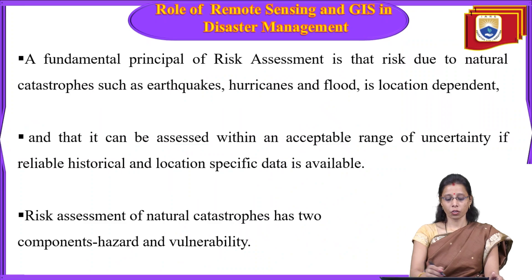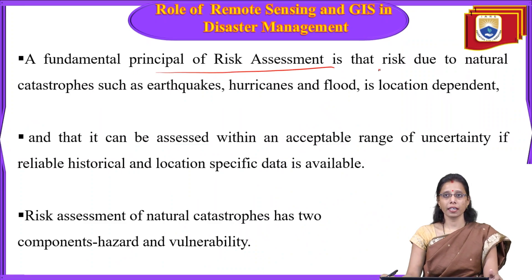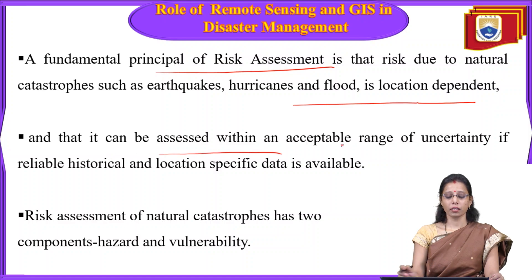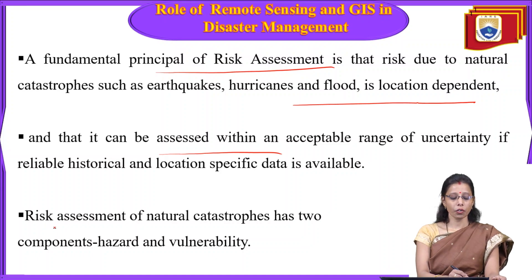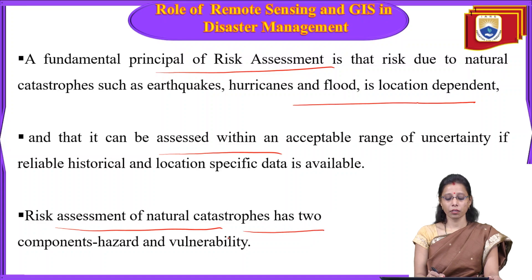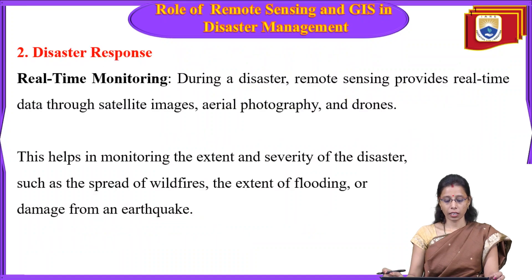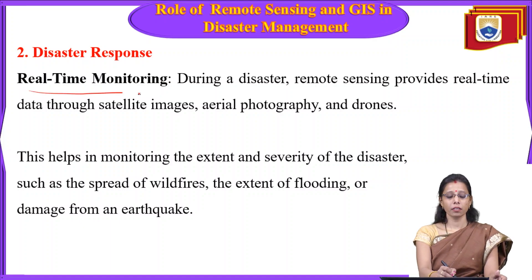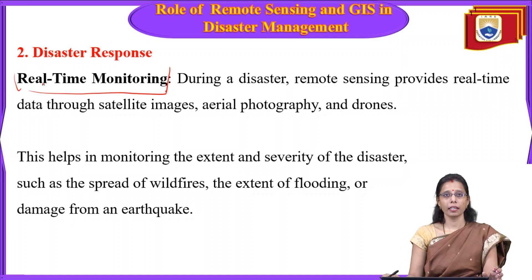The fundamental principle of risk assessment is that risk due to natural catastrophes such as earthquakes, hurricanes, and floods is location-dependent, and can be assessed within an acceptable range of uncertainty if reliable historical location-specific data is available. Risk assessment of natural catastrophes has two components: hazard and vulnerability. Remote sensing and GIS are very helpful in the disaster response phase through real-time monitoring.